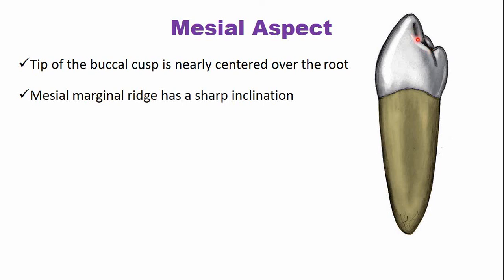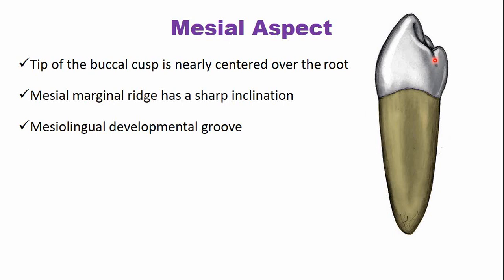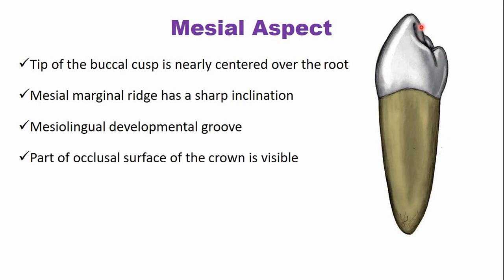The mesial marginal ridge has a sharp inclination towards the lingual side. Because of this sharp inclination, you can see the buccal triangular ridge. The mesiolingual developmental groove is visible here and is one of the characteristic features of this tooth. The part of the occlusal surface is visible from the mesial aspect.